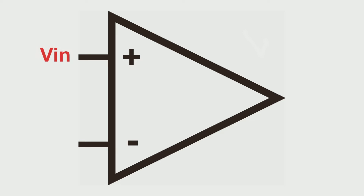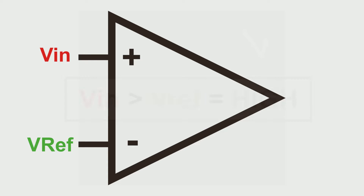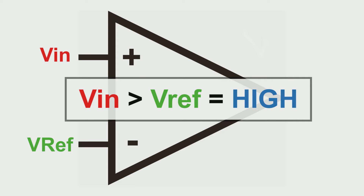This is the comparator symbol. It has two inputs: a positive input and a negative input. The positive input will be the voltage you want to compare, and the negative input is the reference. When your input voltage is more than the voltage at the reference, the output will be high. This is called a non-inverting comparator, because it gives a high state when the input voltage is more than the voltage reference.